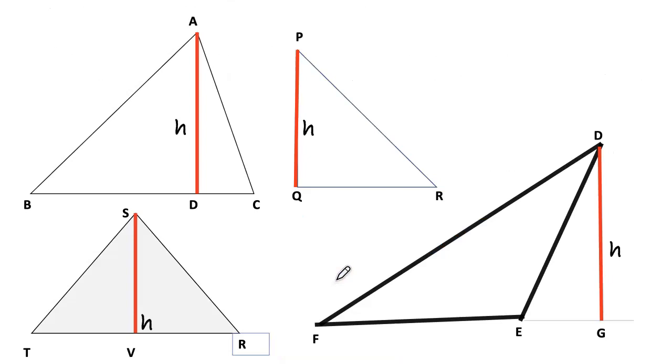Let us see a few examples here. The triangle ABC, the base is BC and the height is AD. The triangle PQR, the base is QR and the height is PQ. The triangle STR, the height is SV and base is TR. The triangle DEF, the base is FE and height is DG.